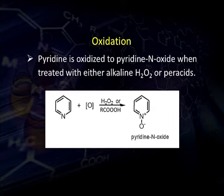Besides reduction, pyridine also gives oxidation reactions. When oxidized with hydrogen peroxide, alkaline hydrogen peroxide, or with a peracid, it gives pyridine N-oxide. So these are the important physical as well as chemical properties of pyridine.